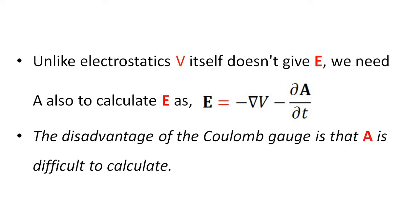But the vector potential A is difficult to calculate. So it is the disadvantage of Coulomb gauge.